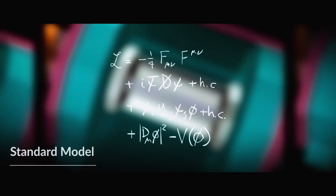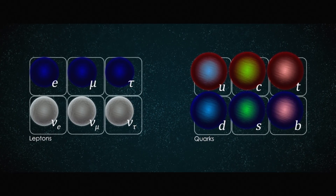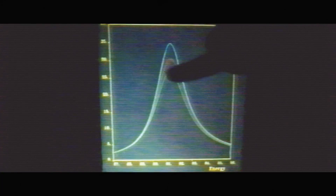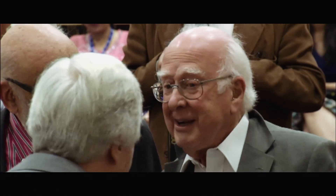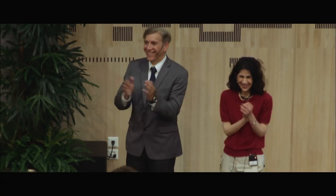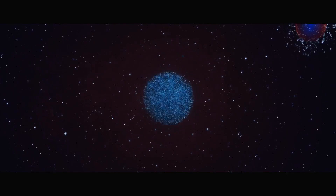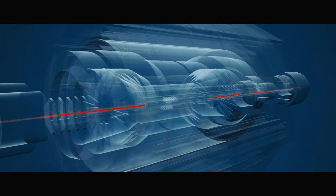In addition, there are a number of features in the standard model that arise without an explanation. The fundamental building blocks of matter are six quarks and six leptons, arranged in three families, but we don't know why there are exactly three of these families. We understand the mechanism that gives these particles their masses, since the discovery of the Higgs boson in 2012 and the studies of its properties that followed. But the mechanism does not predict the values of these masses — we can measure them, but we cannot explain where they come from.